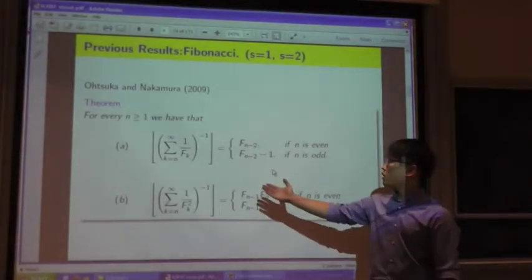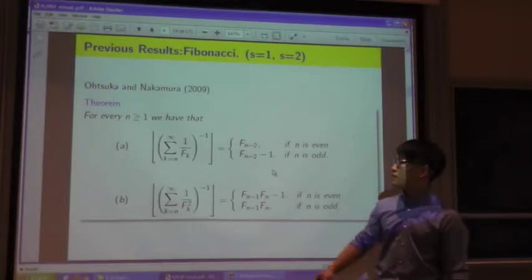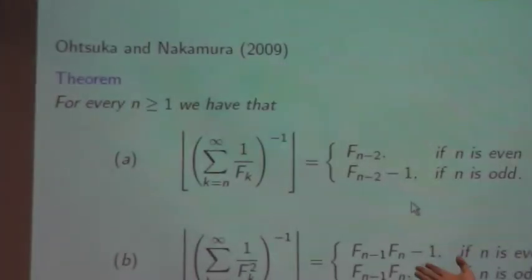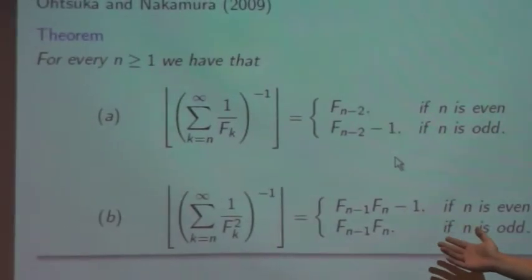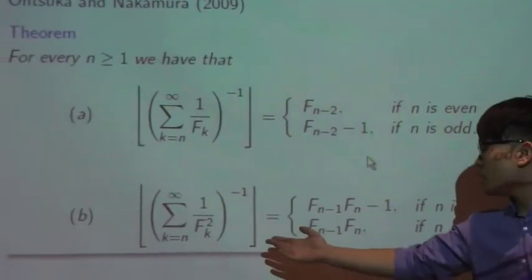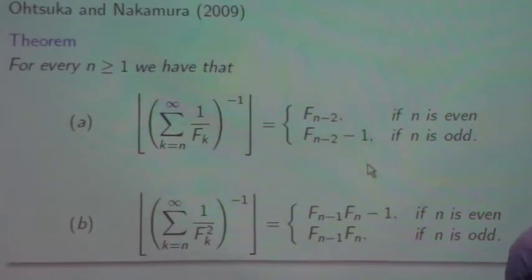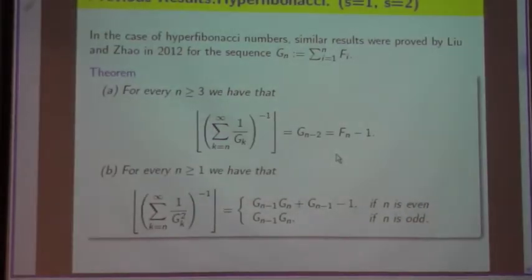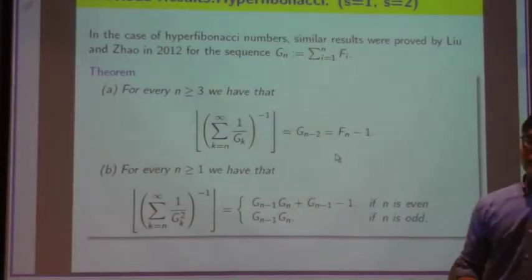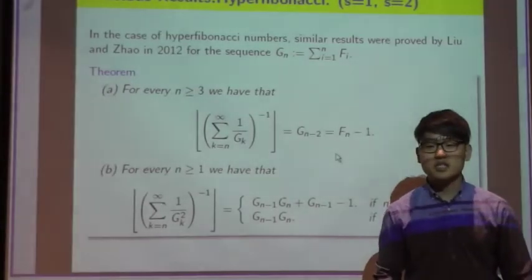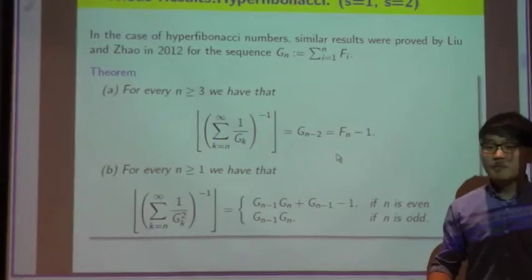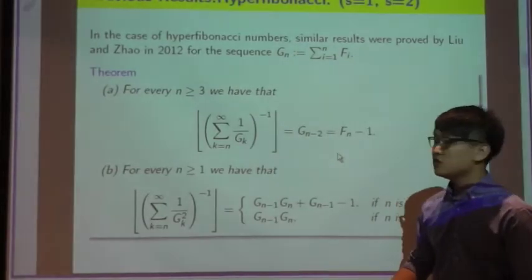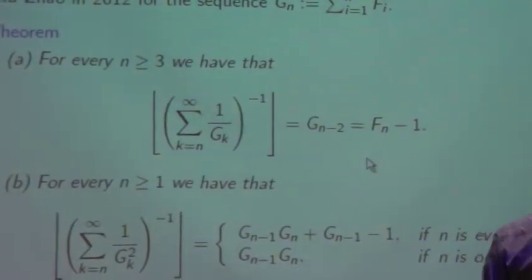They studied this quantity — specifically, what this floor function converges to. They found that depending on the parity of n, it would approach F(n-1), F(n-2), or F(n-2)-1, and also what it approaches when s equals 2. Others have done similar attempts with variations using the hyper-Fibonacci numbers — Professor Luwin Zhao also in 2012. I realized this isn't an old topic; mathematicians are coming back to it again and again, so maybe I could do further research and change what they've been doing.